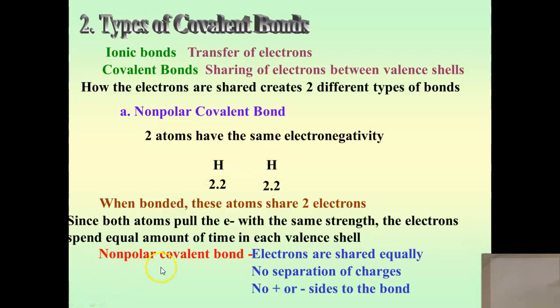Because there's no separation of charge, neither one of these atoms gets the electron more often, so they pretty much stay at a neutral charge. That means there's no positive end and no negative end. When we compare this to the second type of covalent bond, it's going to make a lot more sense.